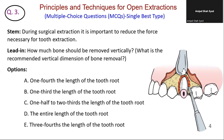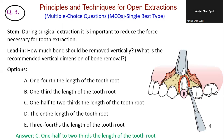Next question: during surgical extraction, it is important to reduce the force necessary for tooth extraction. How much bone should be removed vertically? Option A: this amount may be insufficient. Option B: this is less than the recommended amount and may not sufficiently reduce extraction force. Option C is correct — this is the recommended amount to reduce the force necessary for extraction. In this figure, bone is removed with a bone-cutting bur after reflection of a standard envelope flap; bone should be removed approximately one-half to two-thirds the length of the tooth root. Option D: removing this much bone is excessive and unnecessary. Option E: this is more than the recommended amount and may be excessive. The correct answer is C — bone should be removed approximately one-half to two-thirds of the length of the tooth root to sufficiently reduce the force necessary for extraction.